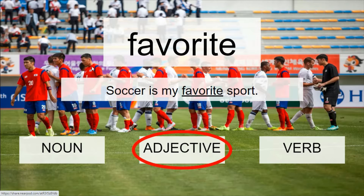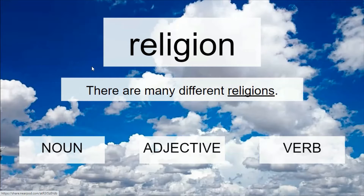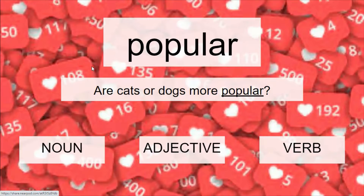Next, the word is 'religion,' with the sentence: 'There are many different religions.' Let's read it together — one, two, three: 'There are many different religions.' Is 'religion' a noun, an adjective, or a verb? It is a noun. Excellent work!